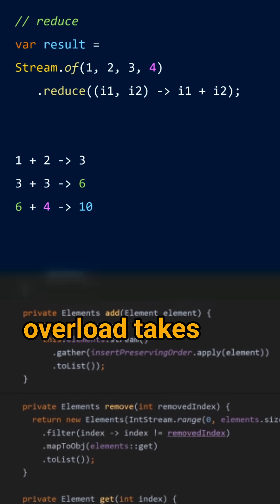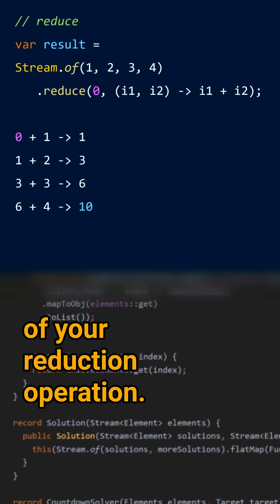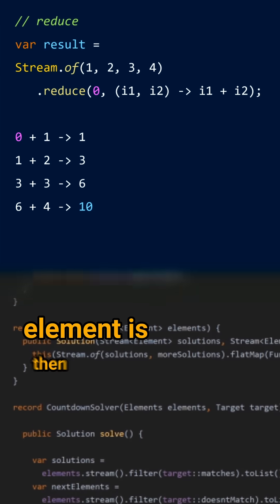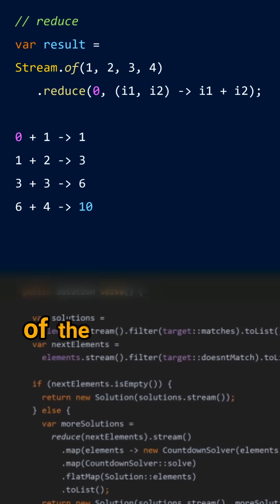The second overload takes the identity element of your reduction operation. This identity element is then used as the first element of the reduction.